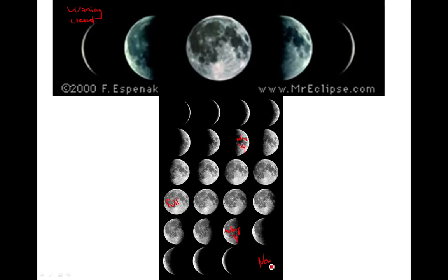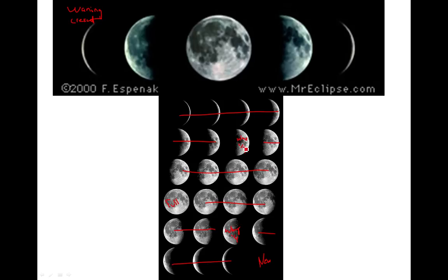That only takes up four of the moons — one waxing quarter, one waning quarter, one full, one new. That only takes up four nights out of our 29 and a half. The rest of them are crescents or gibbouses. So you see lots of waxing crescents, then one waxing quarter, lots of waxing gibbouses, one full, lots of waning gibbouses, one waning quarter, lots of waning crescents, one new.